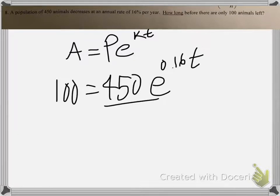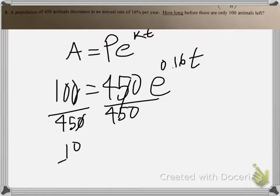Alright, so let's go ahead and divide both sides by 450. And then right here, we can cancel the zeros at the end. So now you have 10 over 45. And then now we have 0.16 T.